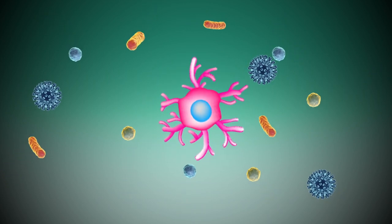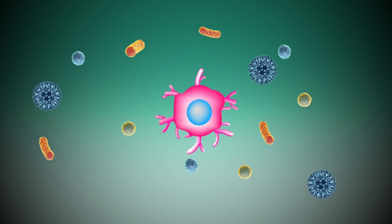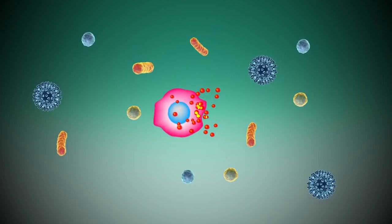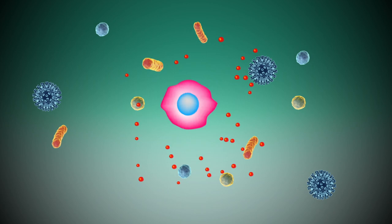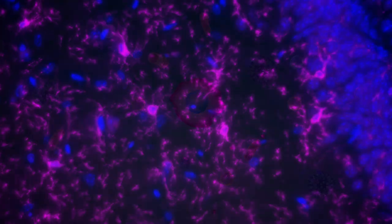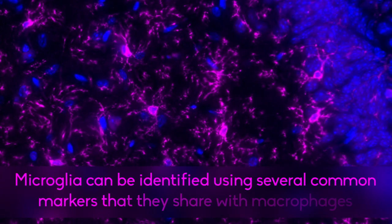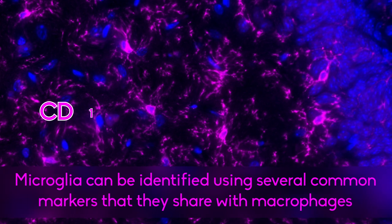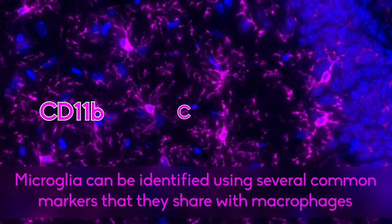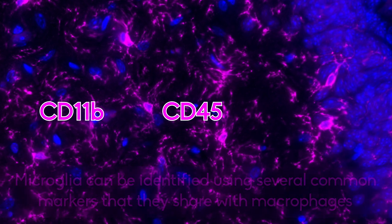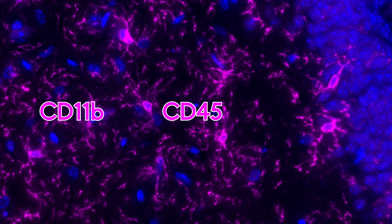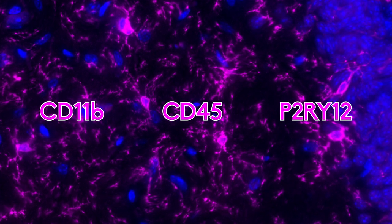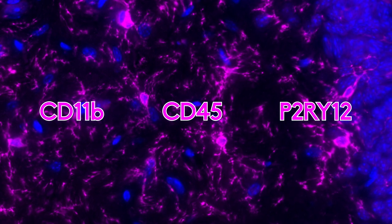These cells undergo morphological changes to remove encountered threats and release inflammatory molecules to communicate with peripheral immune cells. Microglia can be identified using several common markers which they share with macrophages, such as CD11b and CD45. They also express specific markers such as P2RY12, which allow for their distinction from other cell types in the brain.